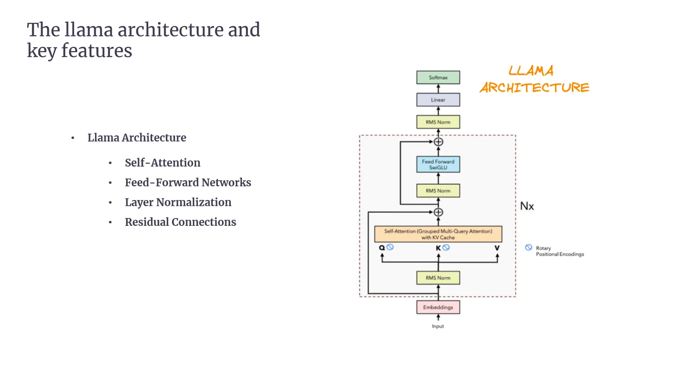Residual Connections. These connections around both the self-attention and feed-forward layers help prevent problems like vanishing gradients and improve the model's learning efficiency.